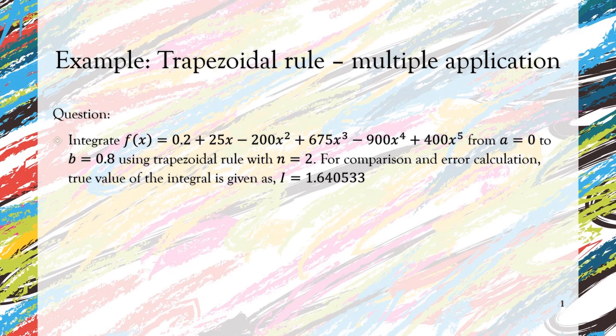So we have this function, the same border a is equal to 0, b equal to 0.8, and it is given that the number of segment n is equal to 2, and again the value of true answer is been given which is I is equal to 1.640533 which will be used as a comparison and to calculate the true error.